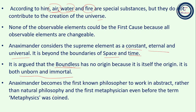Anaximander becomes the first known philosopher to work in abstract rather than natural philosophy — unlike Thales, who dealt with natural elements. He worked with something which is not the object of observation. So Anaximander can be considered the first metaphysician, even before the term 'metaphysics' was coined.